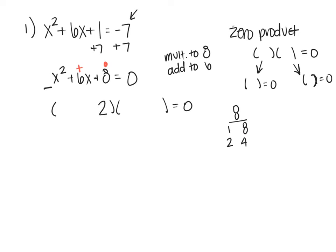So I've got 2 and 4, x and x, because I also have to multiply to x squared. The only way to split it up is x and x. Now let's look at my signs. I want to multiply to a positive number and add to a positive number. So the only way to do that is positive, positive.